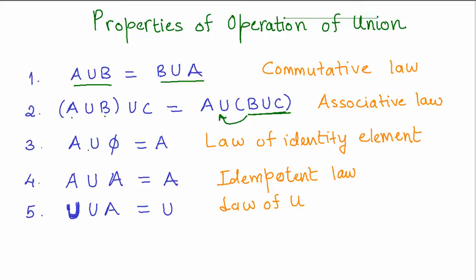The third law is the law of identity element. A union φ equals A — φ is nothing, so when you combine anything with nothing you get that thing back. You have a few elements in set A and nothing in the null set, so when you combine set A with the null set you get A back. Also, A union A equals A — that's straightforward because you are not combining anything new.